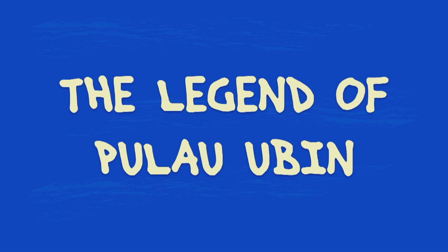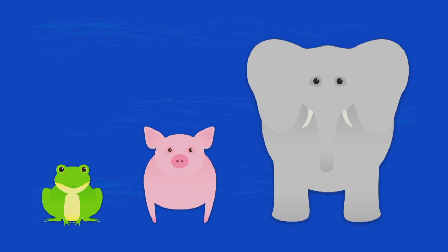The Legend of Pulau Ubin. Once upon a time, there was a frog, a pig and an elephant.